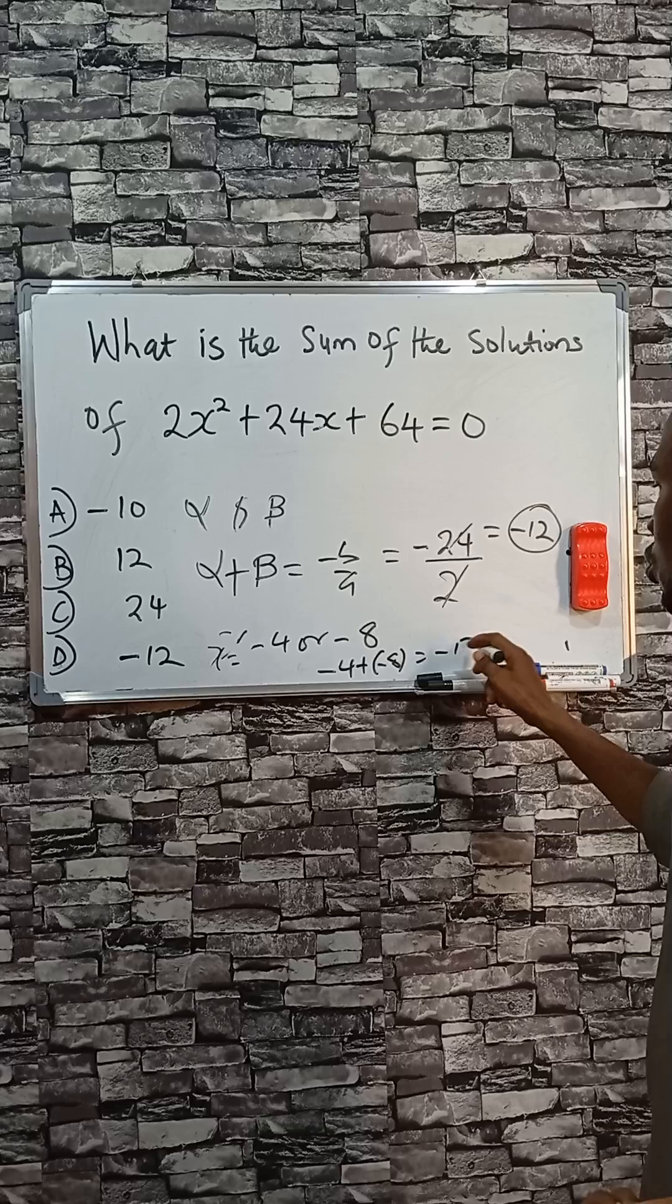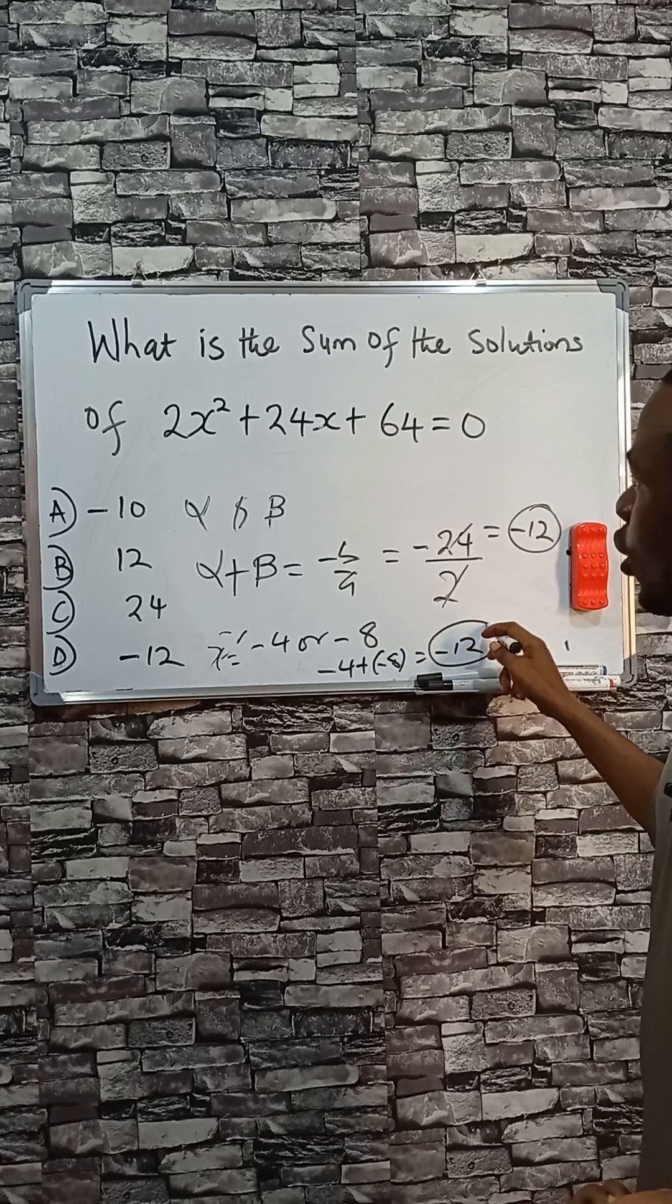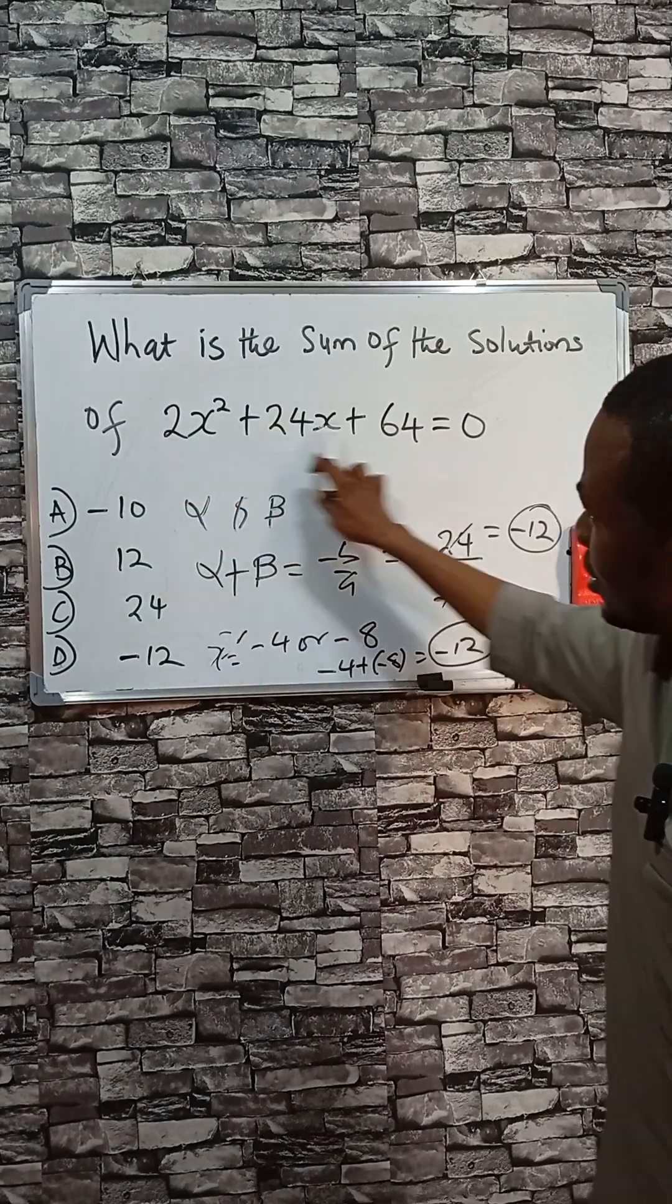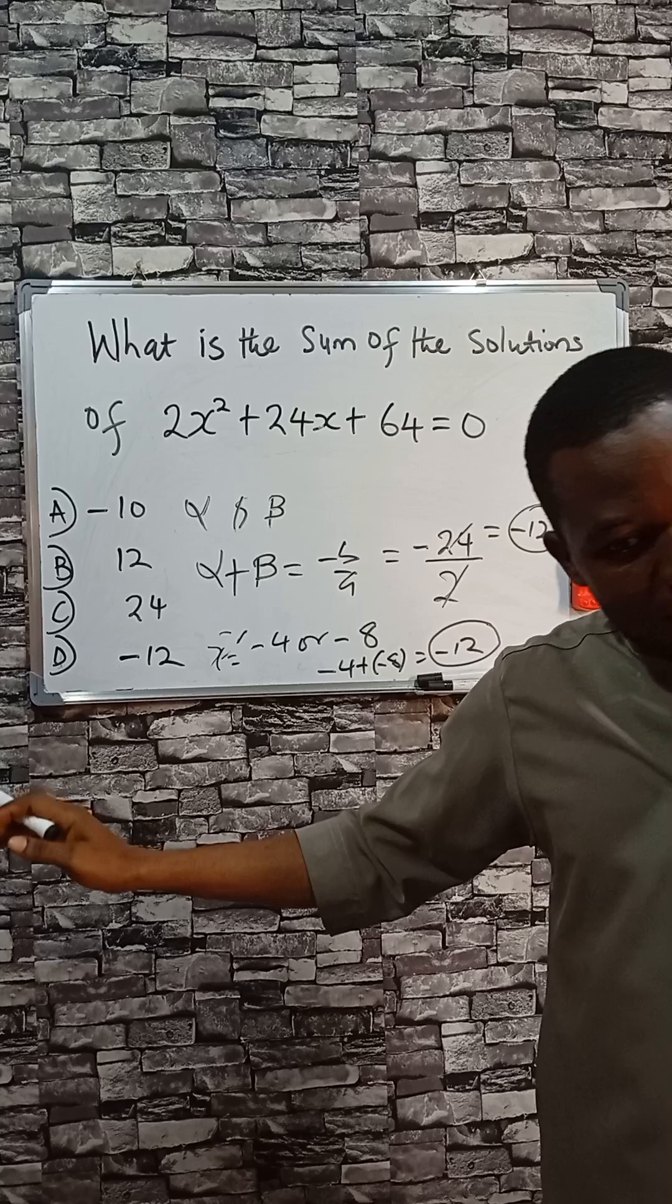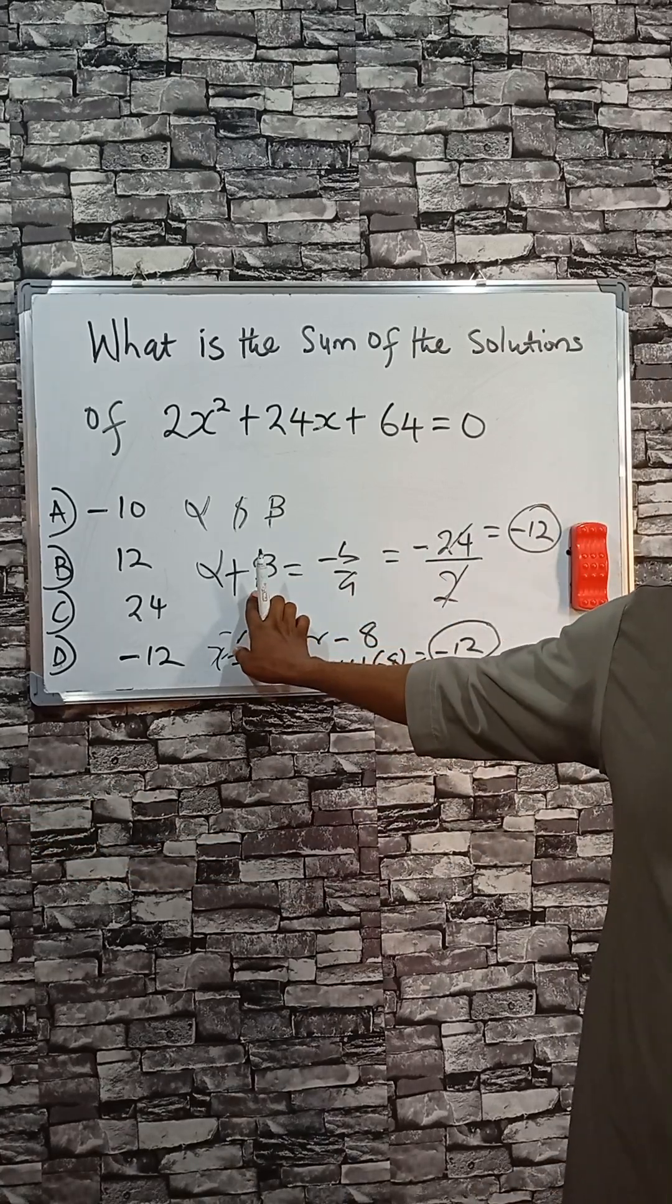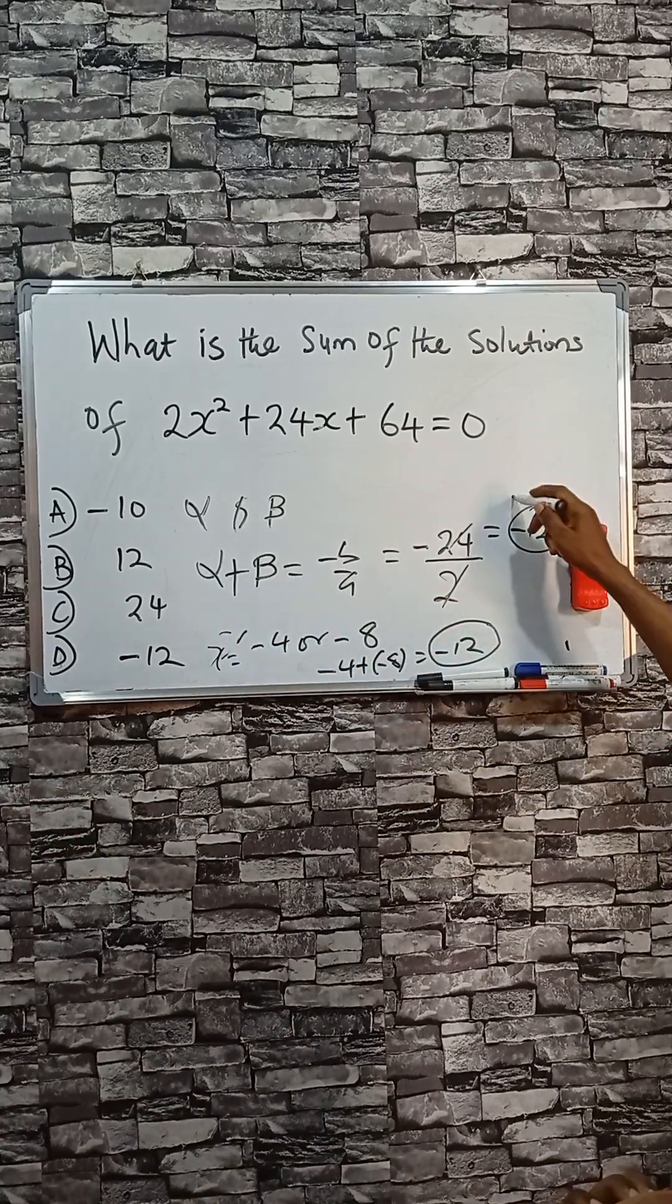So whichever way, whether you are factorizing this which should take time or you are using this other method to solve this, you still have minus 12.